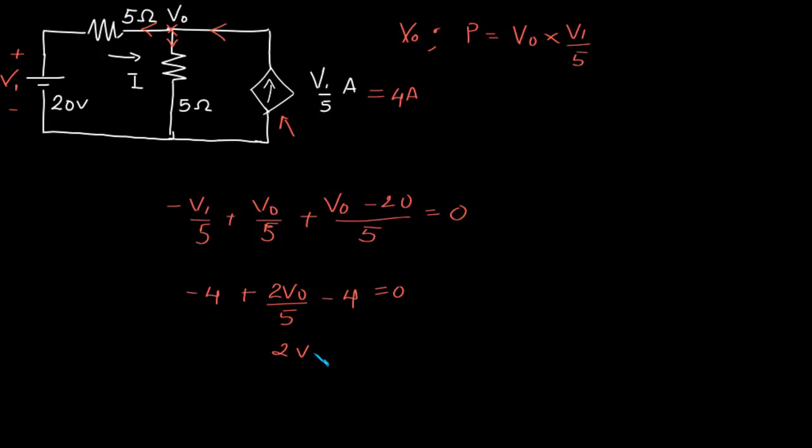That is, we have 2V0 by 5 equal to 8 and V0 is 8 into 5 by 2, that is 4 into 5, that is 20 volts.